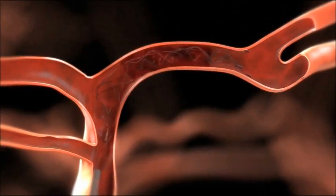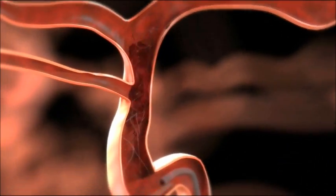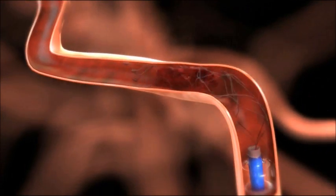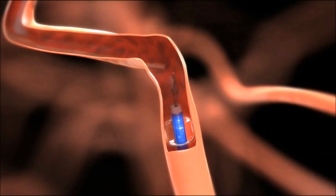To retrieve thrombus, slowly withdraw the microcatheter and solitaire FR as a unit to the guide catheter tip while applying aspiration to the guide catheter.